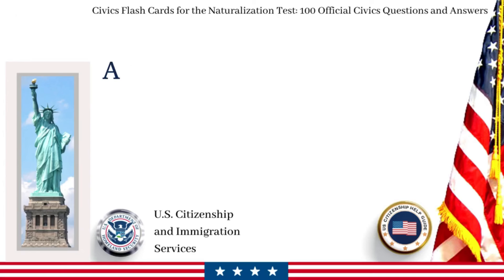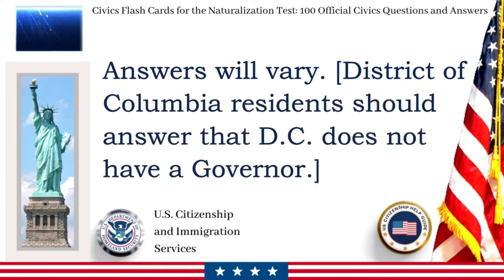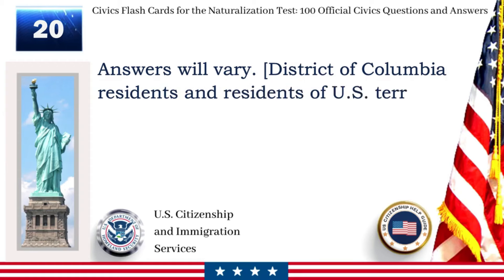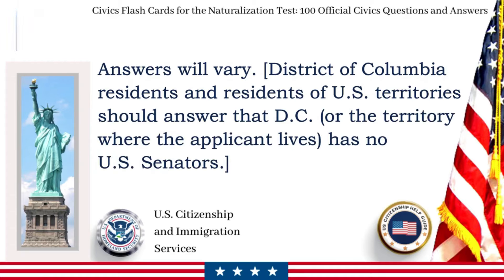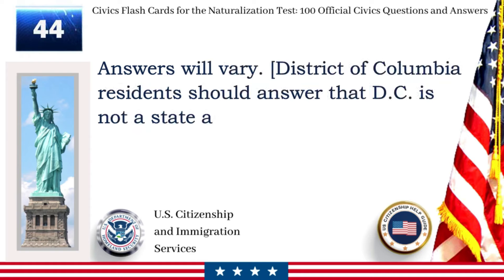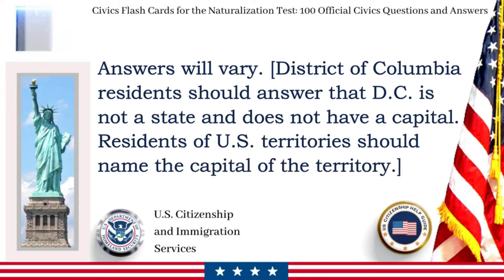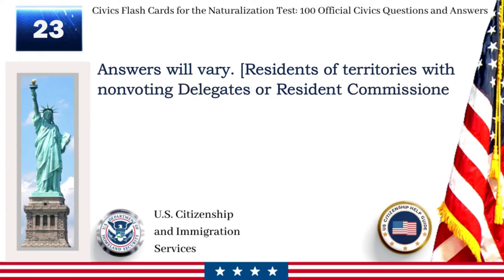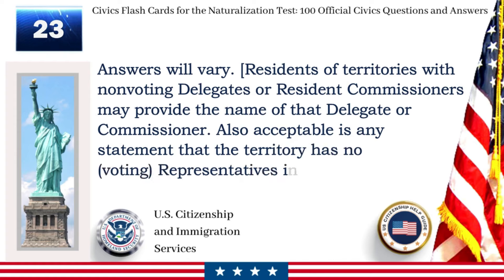Who is the governor of your state now? Answers will vary. District of Columbia residents should answer that D.C. does not have a governor. Who is one of your state's U.S. senators now? Answers will vary. District of Columbia residents and residents of U.S. territories should answer that D.C. or the territory where the applicant lives has no U.S. senators. What is the capital of your state? Answers will vary. District of Columbia residents should answer that D.C. is not a state and does not have a capital. Residents of U.S. territories should name the capital of the territory. Name your U.S. representative. Answers will vary. Residents of territories with non-voting delegates or resident commissioners may provide the name of that delegate or commissioner. Also acceptable is any statement that the territory has no voting representatives in Congress.